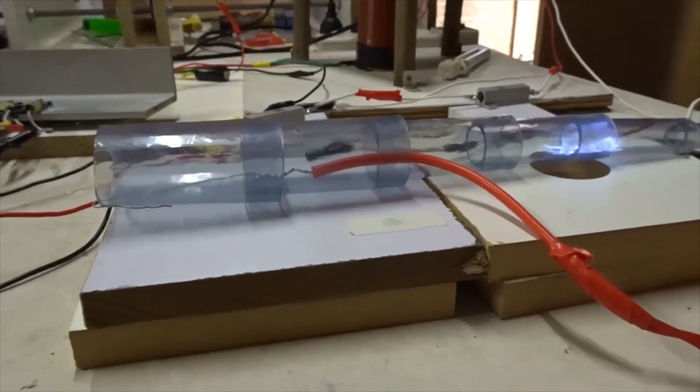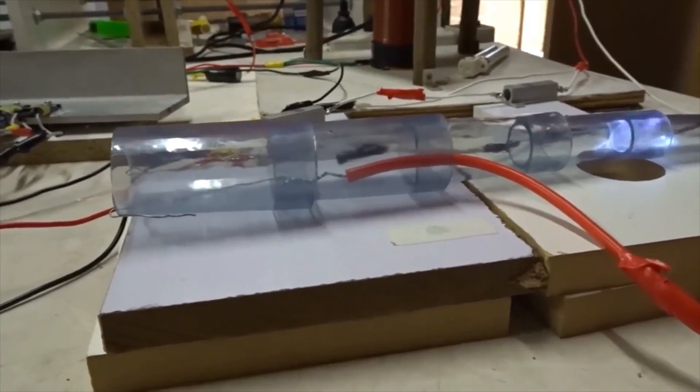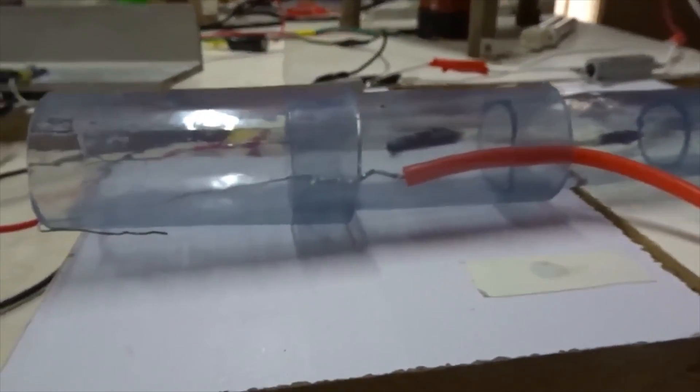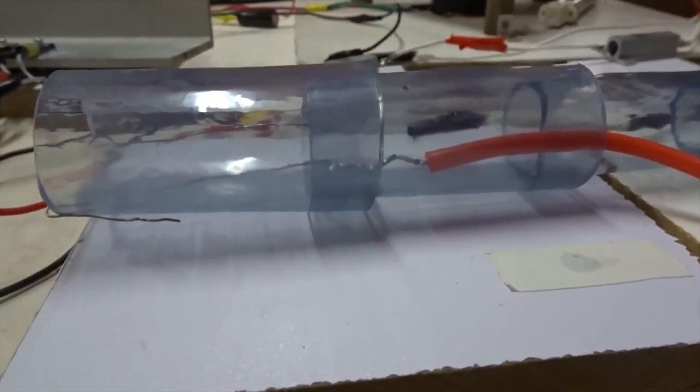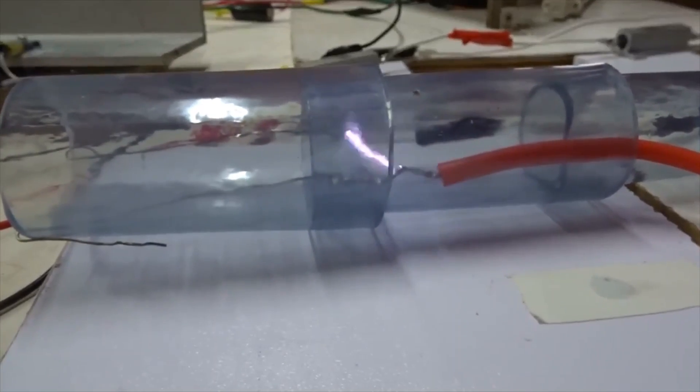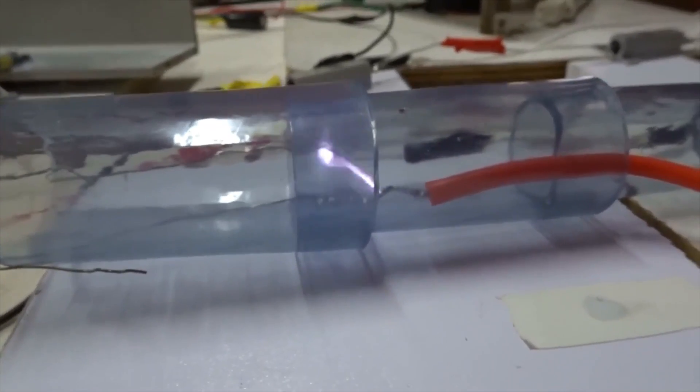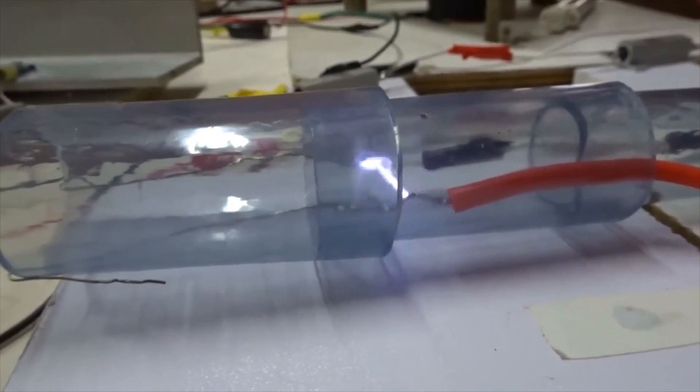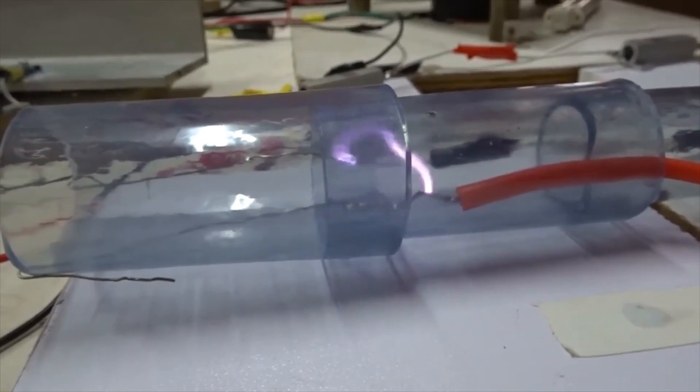As a control, with no magnet there at all, let's see what happens. Just the DC leads at 40 kV. It sort of sits in the middle. That's just the flow of the gas pushing a little, but there's no go to the left or to the right.